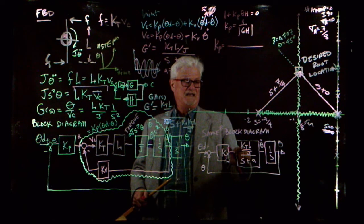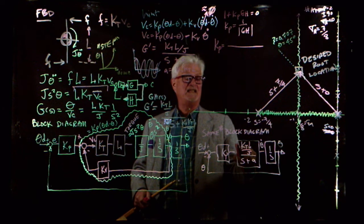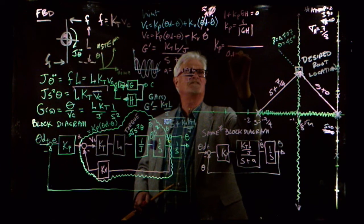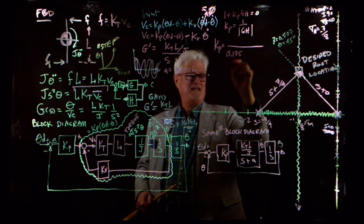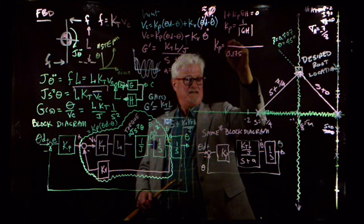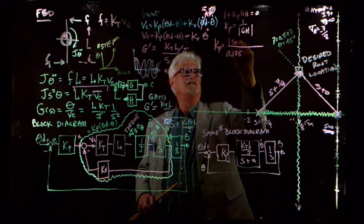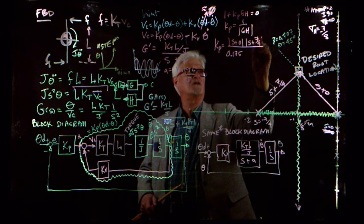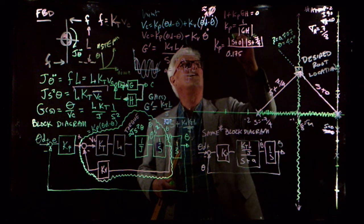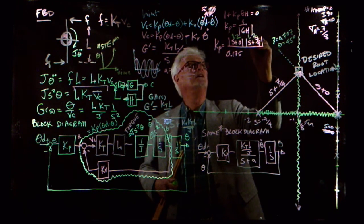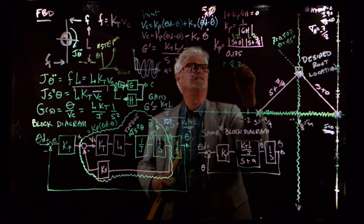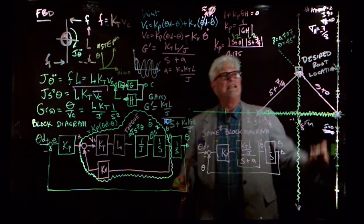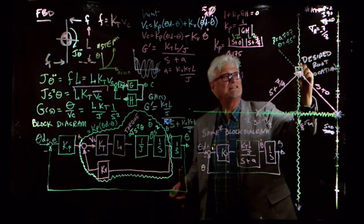K_P equals, in the numerator, K_T*L over J — which for the numbers in this problem is 0.175 — and then the magnitude of (S + 0) times the magnitude of (S + 7/4). Those are both 1.2, so 1.2 times 1.2. If I multiply that through, that gives me K_P equals 8.2.